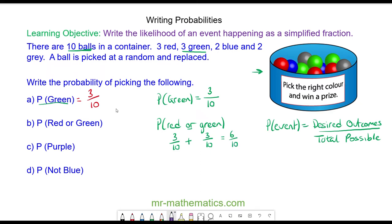We can count these: 1, 2, 3, 4, 5, and 6. We can simplify this fraction by dividing both by 2. So the probability of red or green is 3/5.